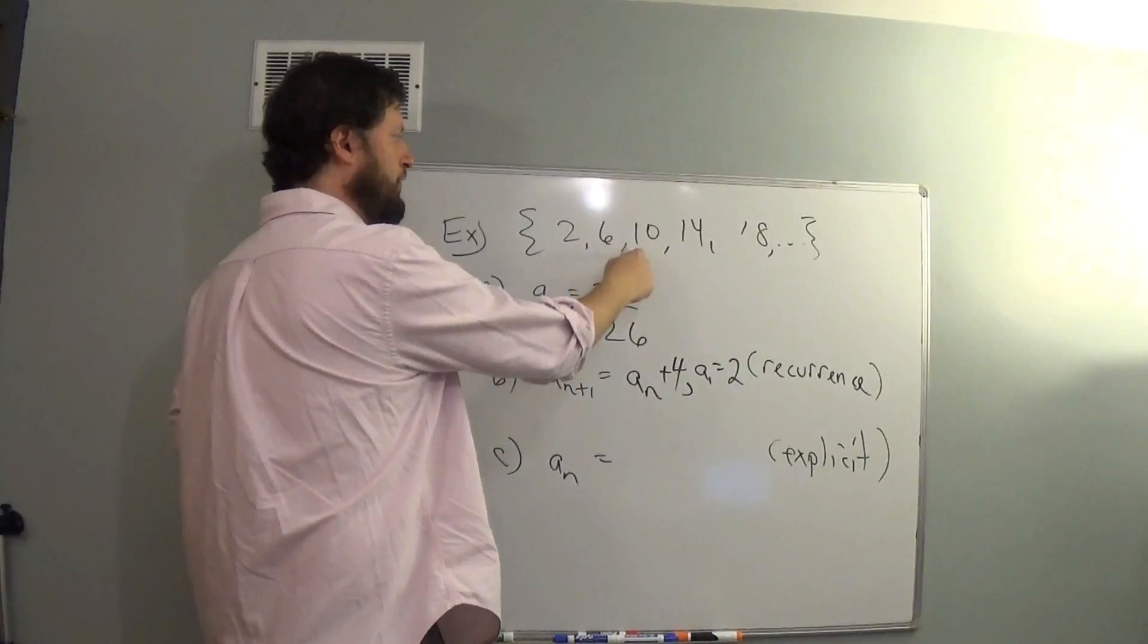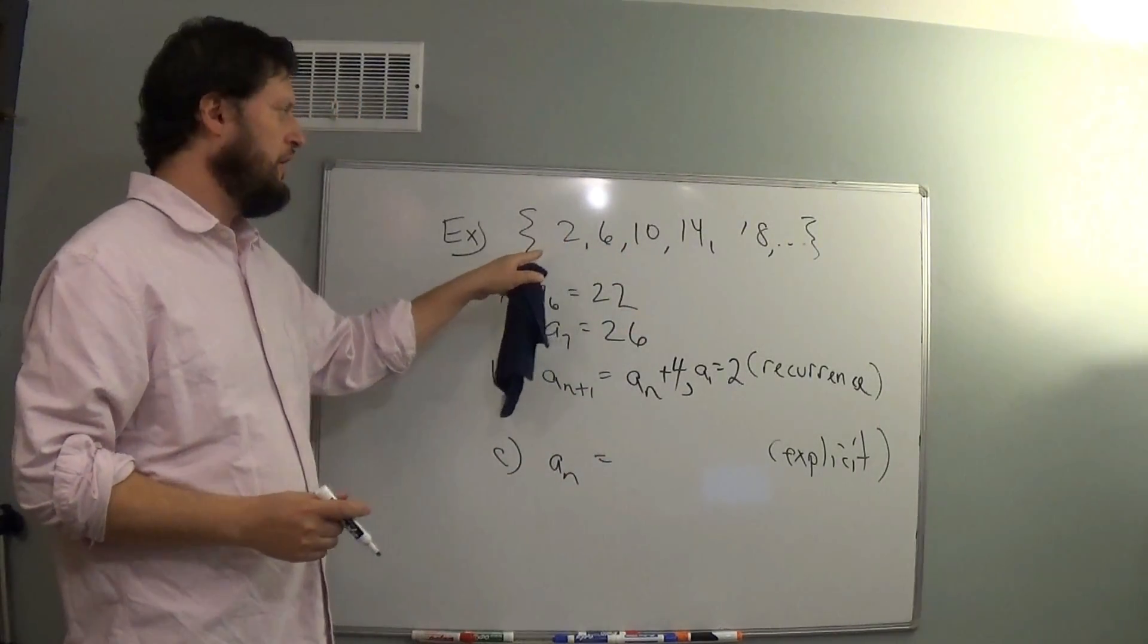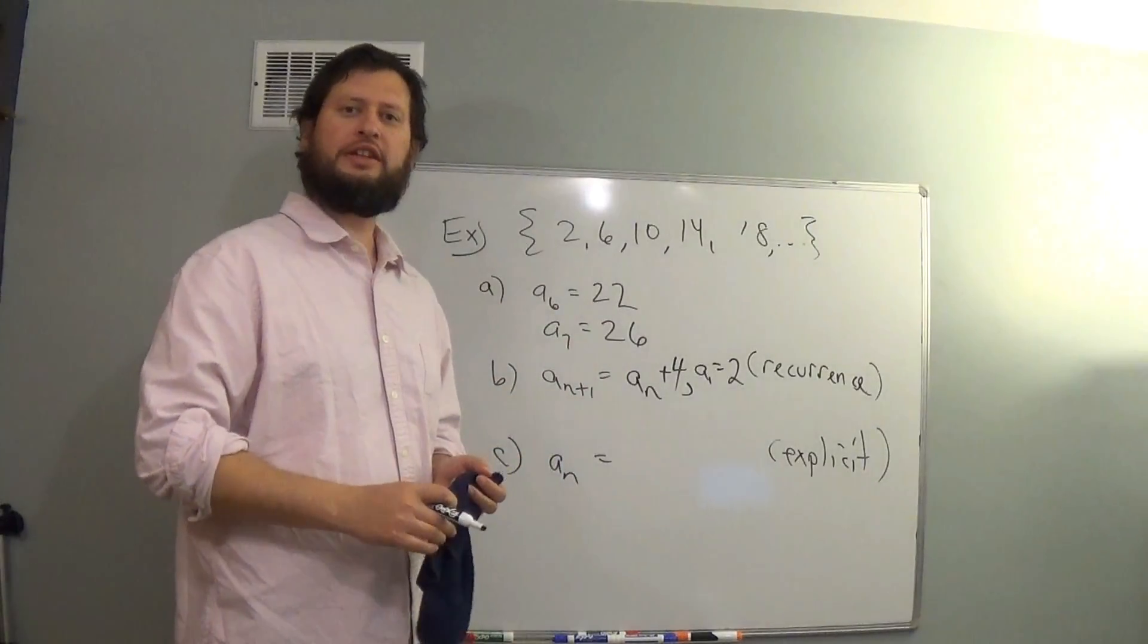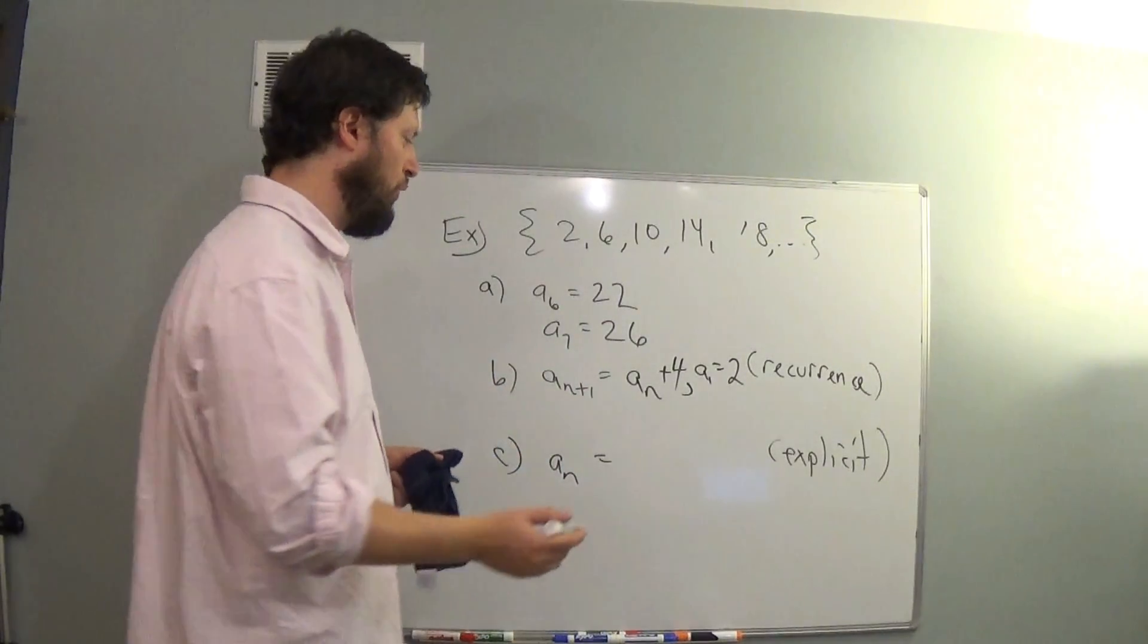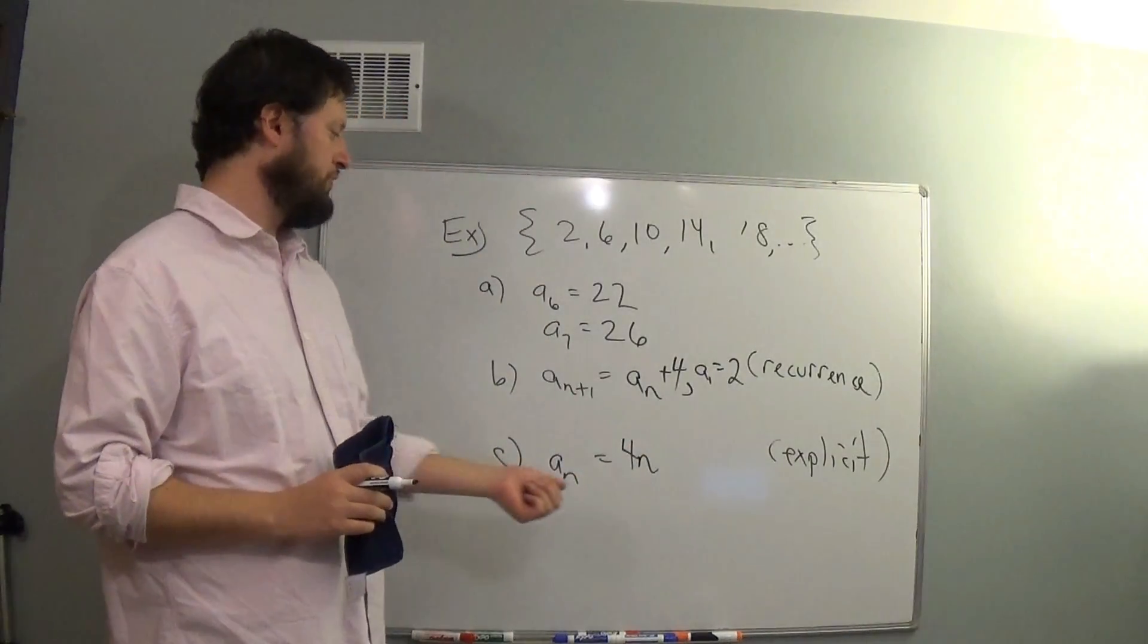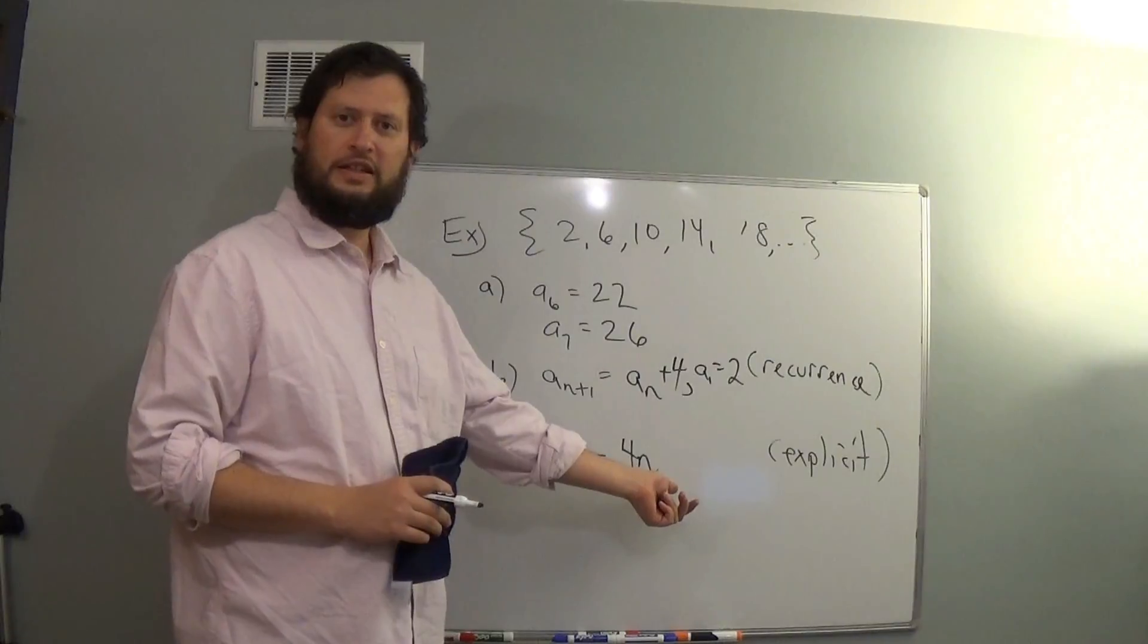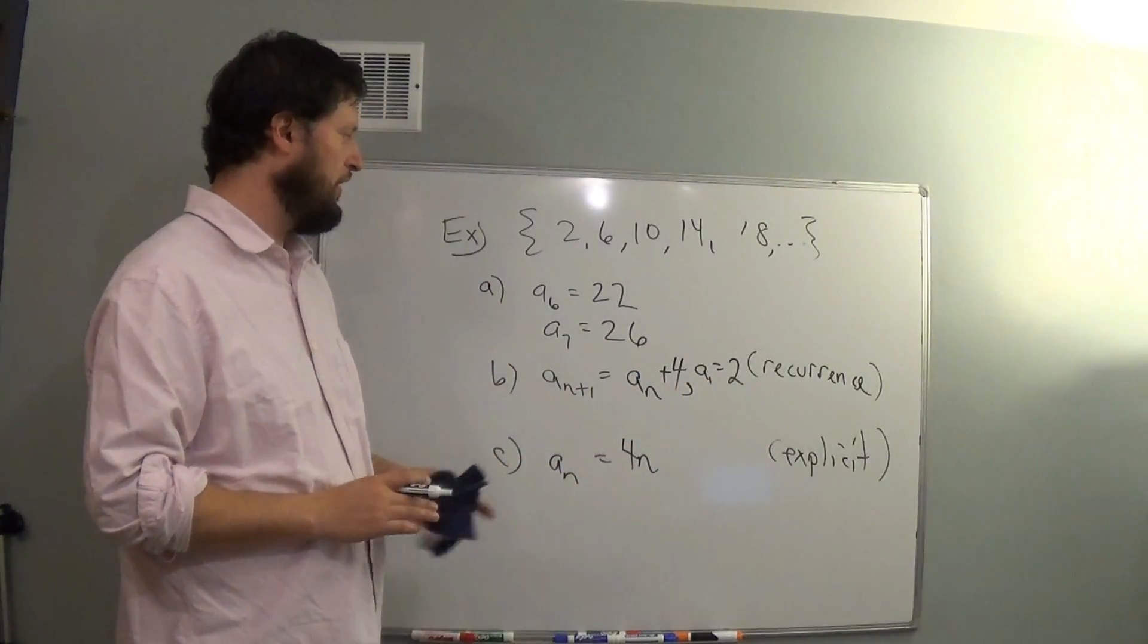So what's happening? Well, we're adding 4 each time, but we're starting at 2. So adding 4 each time should indicate that we have multiples of 4. So let's think about that. Let's use that. Multiples of 4: 4n. So that's 4, that's 8, that's 12, and so on and so on.